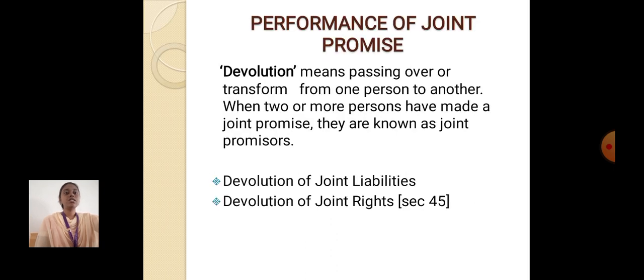Performance of Joint Promises: Devolution means passing over or transferring from one person to another. When two or more persons have made joint promises, they are known as joint promisors.